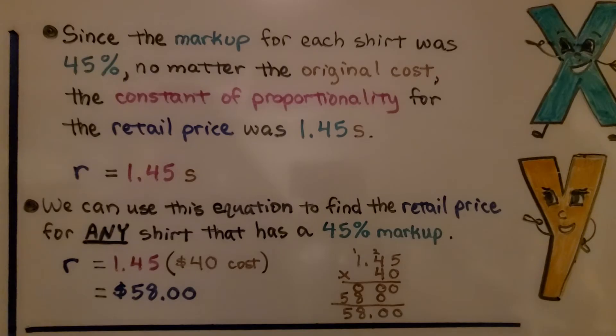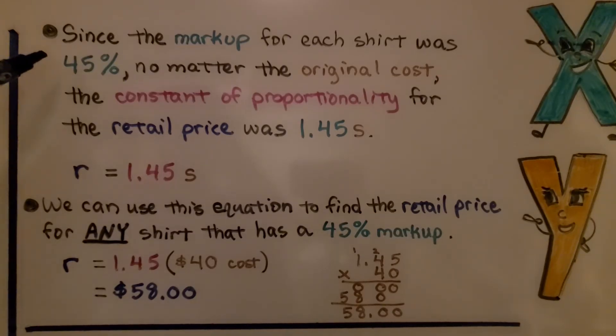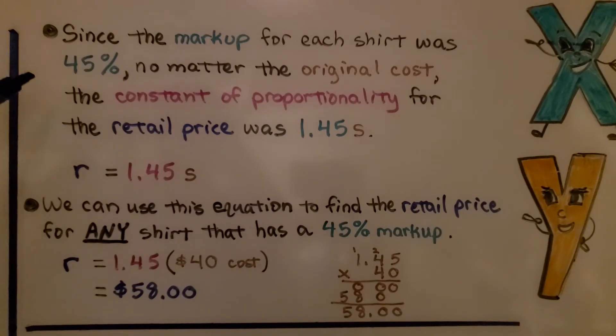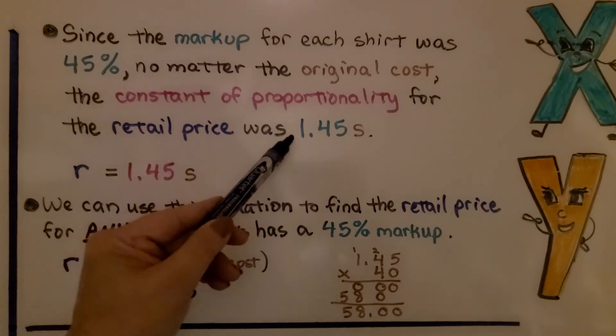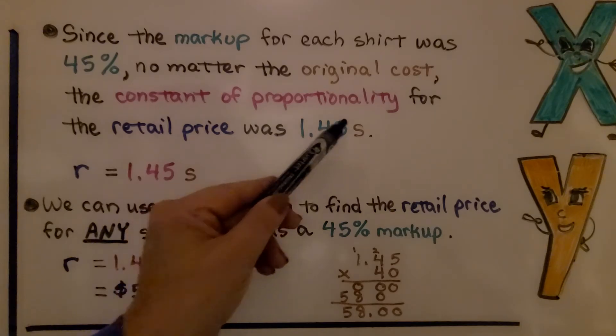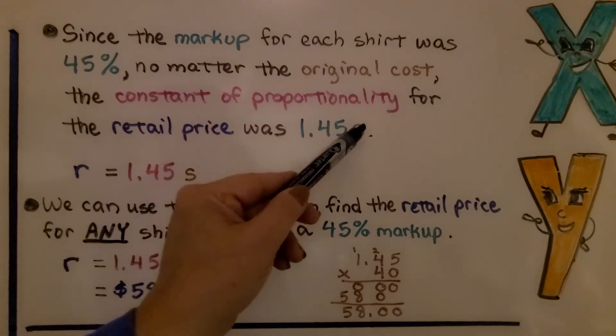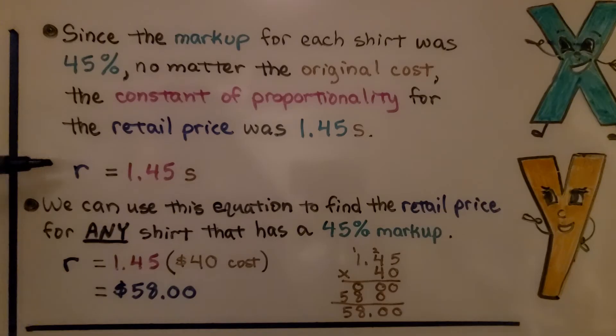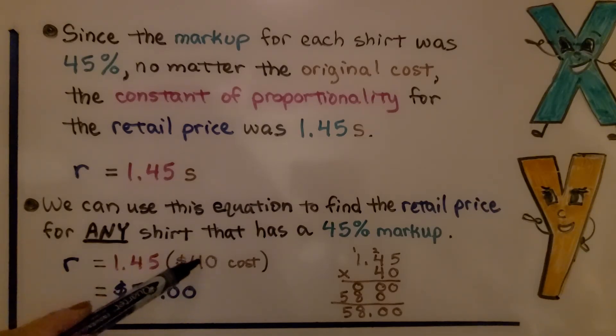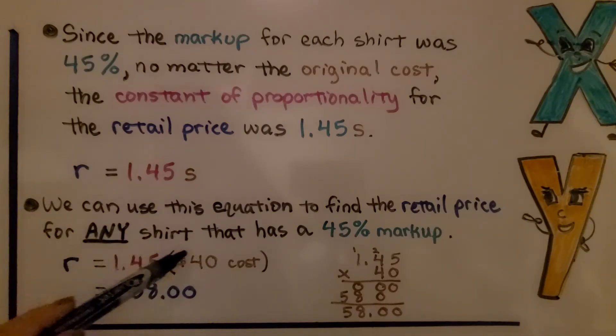Since the markup for each shirt was 45%, no matter the original cost, the constant of proportionality for the retail price was 1.45 multiplied by S, that original cost. We have R equals 1.45S. We can use this equation to find the retail price for any shirt that has a 45% markup. If the cost of the shirt was $40 from the supplier, we can do R equals 1.45 times $40, which gives us $58.